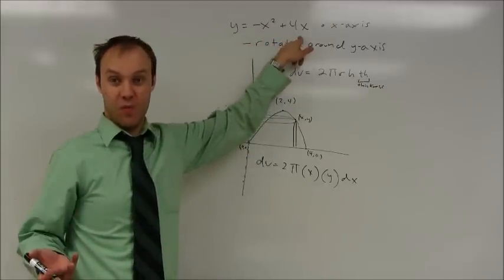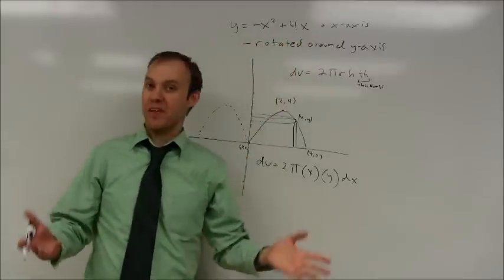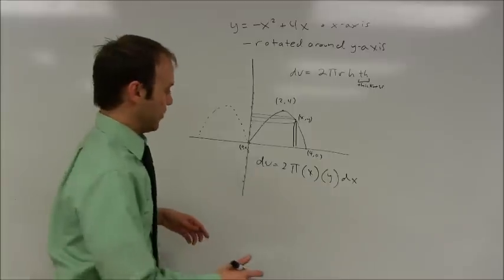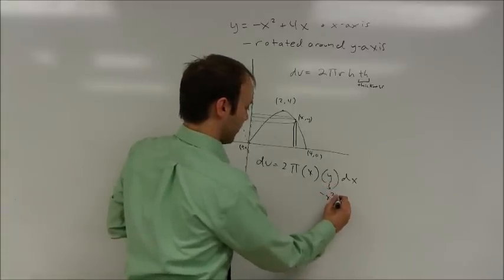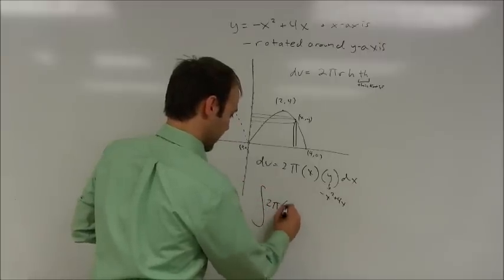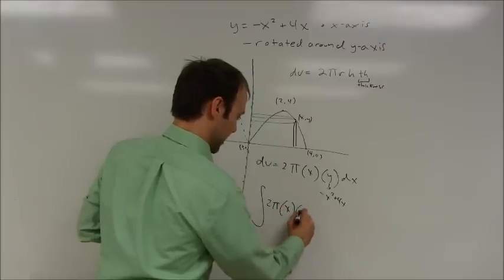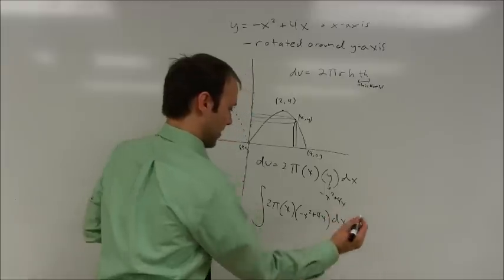Now, if everything had to be written in terms of y, you're going to have to solve this for x. Probably not a good approach for shell method. So, in this case, though, y is negative x squared plus 4x. And so you take your integral. It's 2π times the x value, radius, times the height, times the thickness.